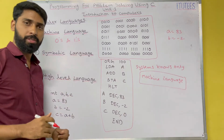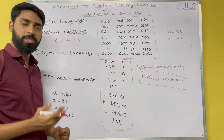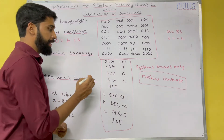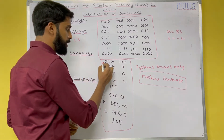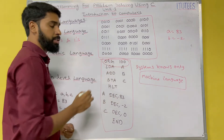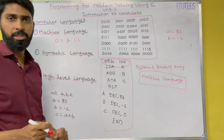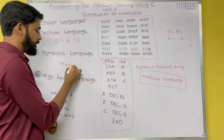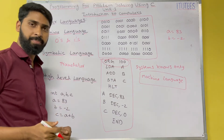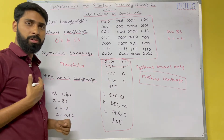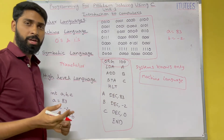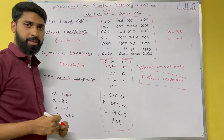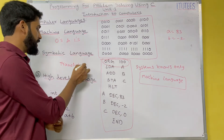So if you are using symbolic language, you are going to give instructions using mnemonics. It is our responsibility to change these instructions into machine language instructions. So we need one translator. If I know Telugu and somebody knows Tamil, how do I give instructions to that person? I need a mediator — that mediator we call a translator.